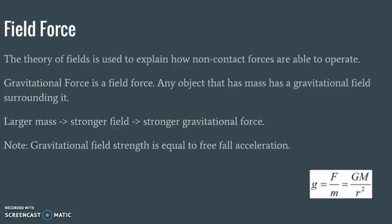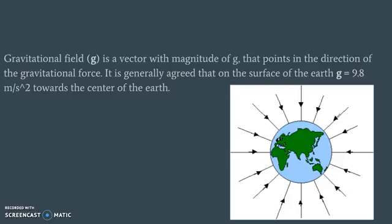This gravitational field is a vector field with a magnitude of little g — 9.8 m/s² on Earth. The gravitational field vector points toward the center of the Earth. On other planets, this value will be different depending on the mass of the planet.